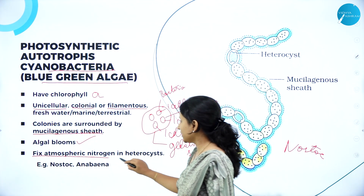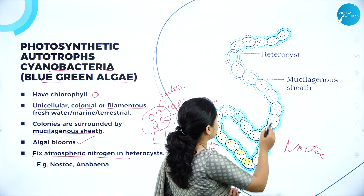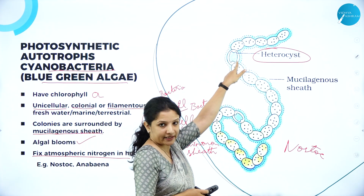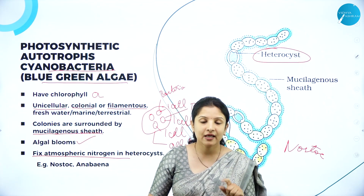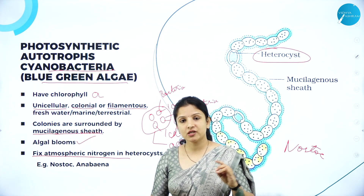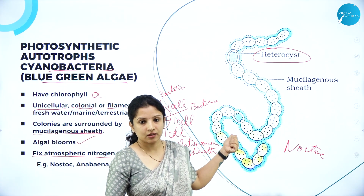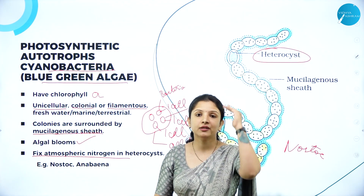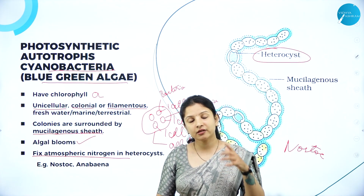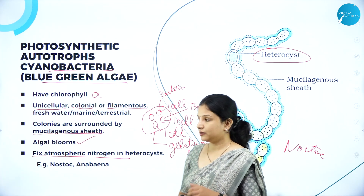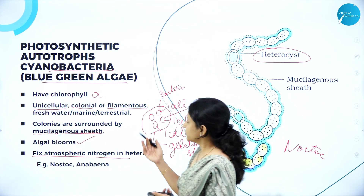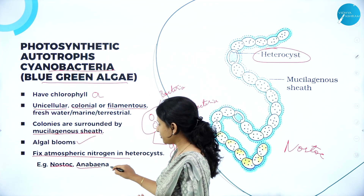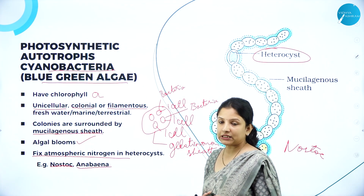They help in fixing atmospheric nitrogen in specialized cells called heterocysts. Example — Nostoc — they have specialized cells called heterocysts, and it is this heterocyst that helps in fixing atmospheric nitrogen. Therefore they are very, very useful for plants because they help in fixing atmospheric nitrogen. They help the plants to make use of the nitrogen that is present in the atmosphere, and in turn they also increase the fertility of the soil, therefore helping the plants to grow properly. So one of the best examples for photosynthetic autotrophic eubacteria is Nostoc and Anabaena, which are both cyanobacteria.